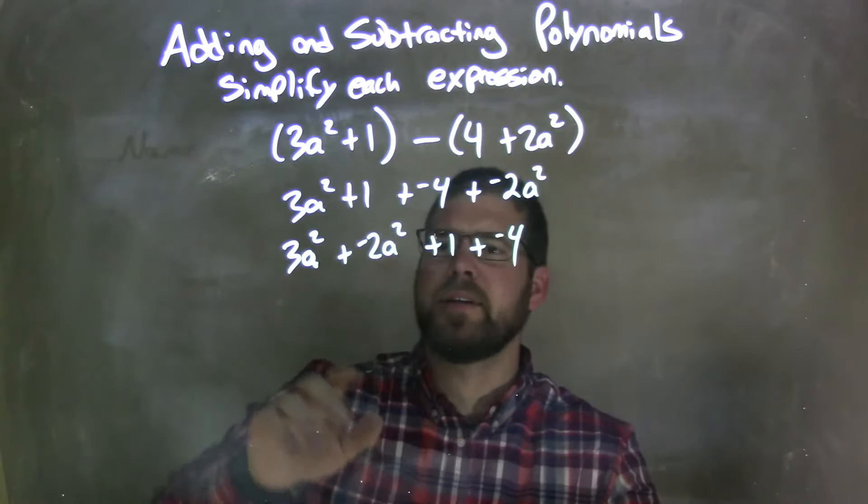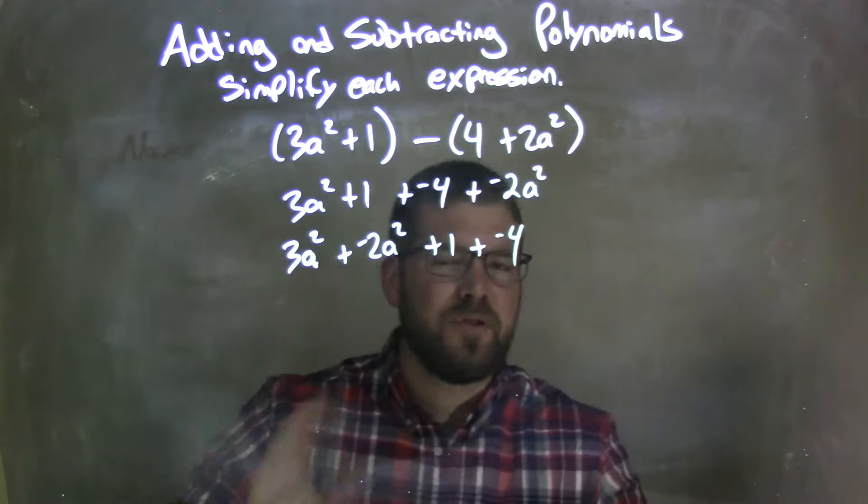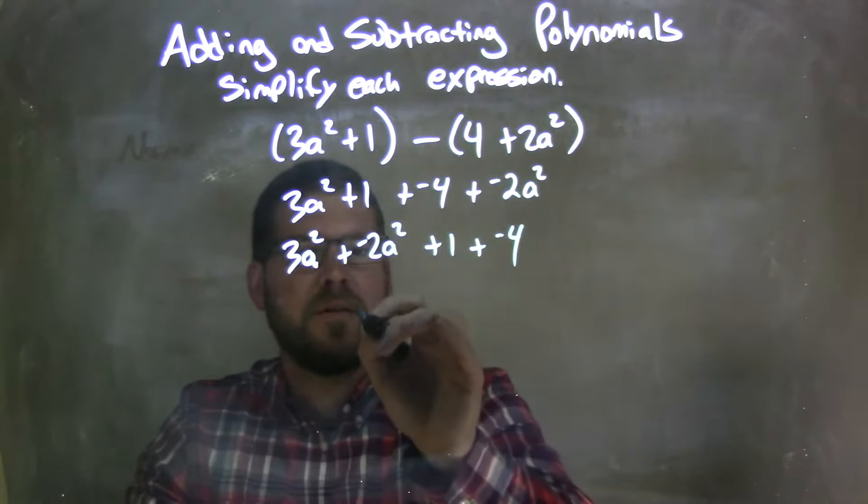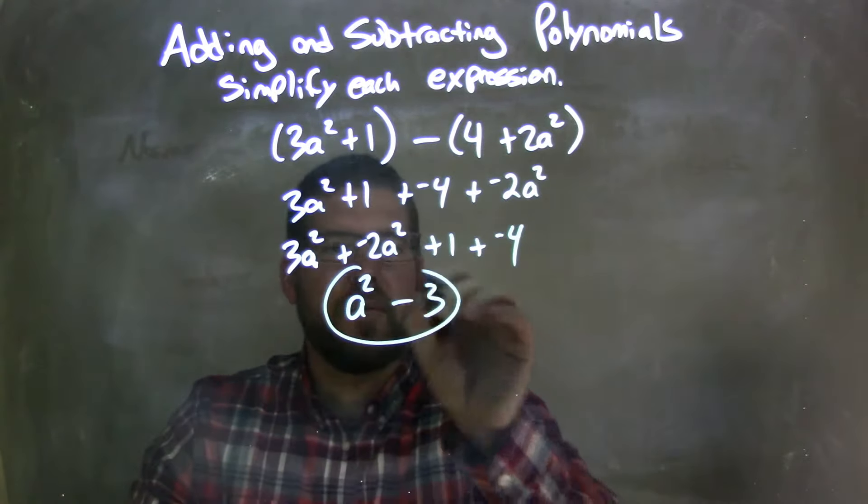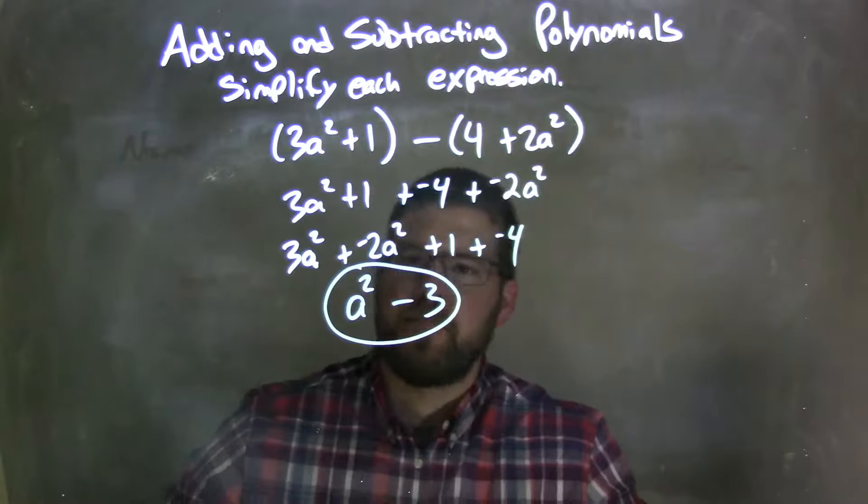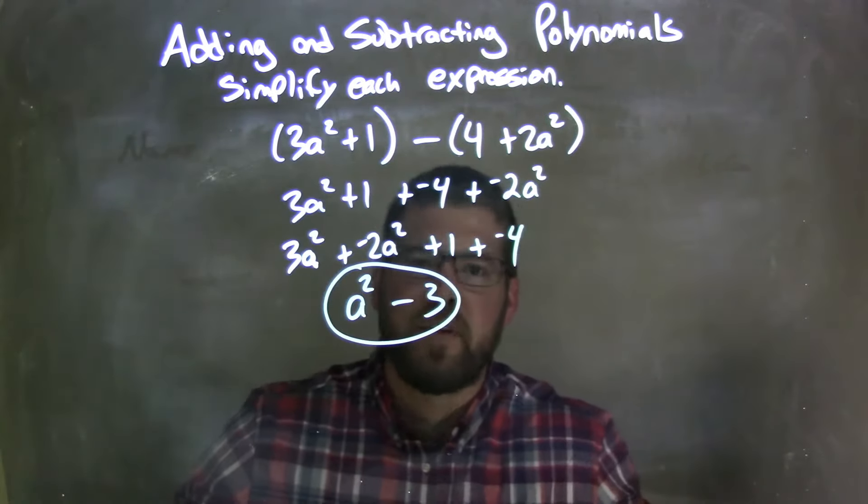Now let's combine my like terms. 3a squared plus a negative 2a squared is just a squared, right? 1a squared. And then 1 plus a negative 4 is a negative 3, so we have a minus 3 here. Adding a negative, same thing as subtracting 3. And then we have a squared minus 3 as our final answer.